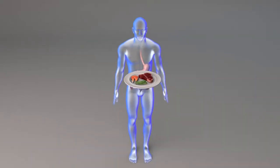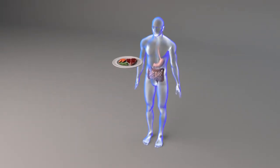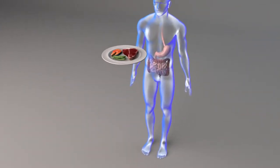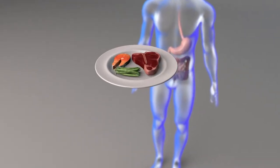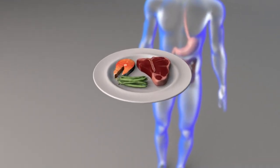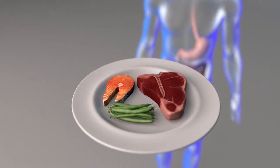Iron is an essential trace element necessary for numerous biochemical and cellular physiological processes. Meat, seafood, and poultry contain both heme and non-heme iron. Iron in plants, iron-fortified foods, and iron supplements contain non-heme iron.